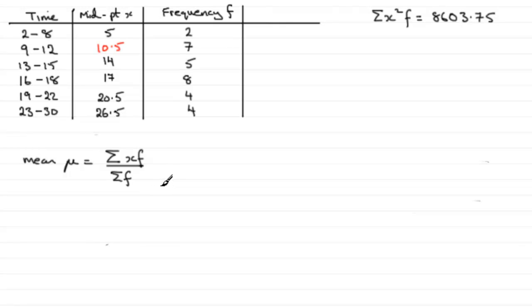We can get the sum of the frequencies, Sigma f. If you add that up, it comes to 30. And as for Sigma xf, the midpoint value multiplied by the frequency, you just got to do five times two is ten, and so on.